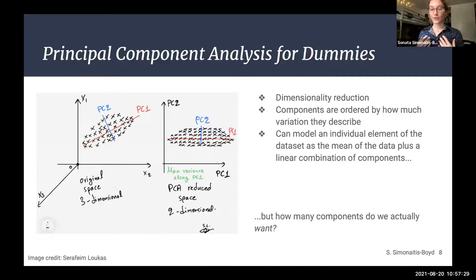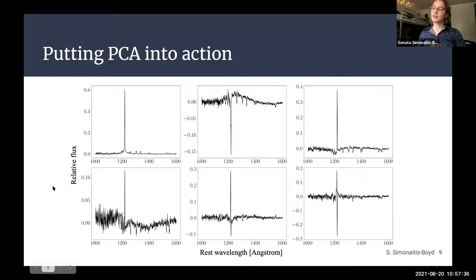But that begs the question, how many components do we actually want? To figure that out, we can start with another qualitative assessment. Plotted here are the first six components, which are all quite distinct, the first six components of our data set, that is. The components that follow aren't, and those are mostly noise, so that kind of gives us a ceiling. We know we don't want more than six components, but do we actually want all six?